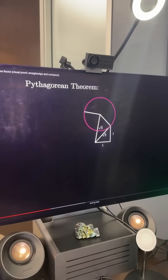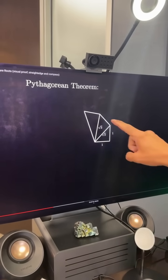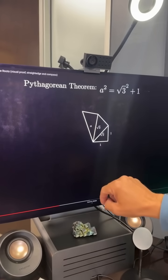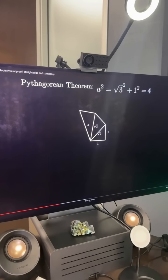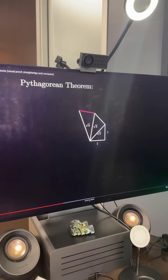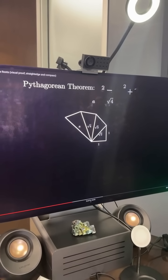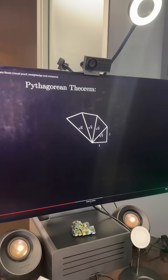So now we extend it again further, keeping this value as 1, this value as 1, this value as 1. And this gives us the square root of 4. We do the same thing further out, and it gives us exactly the square root of 5.